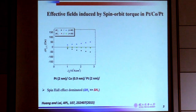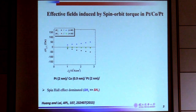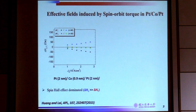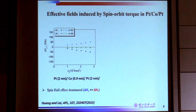Let me show the behavior we observe for the cobalt layers sandwiched by two platinum layers. We measure the effective field by harmonic measurements. We observe a significant effective field in the longitudinal direction but quite small along the transverse direction. So we think we have a spin Hall effect dominating in this kind of system. At first, this seems like a quite symmetric structure.